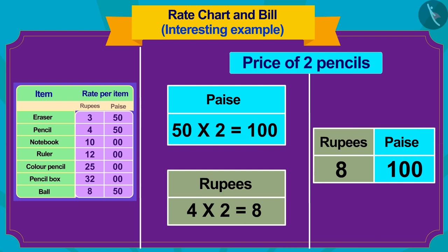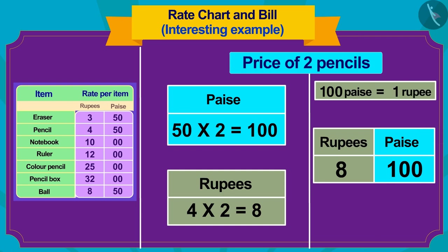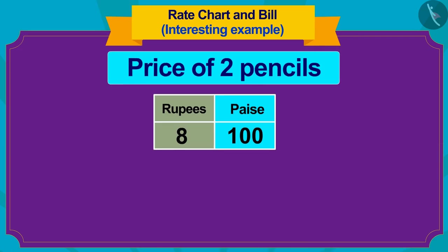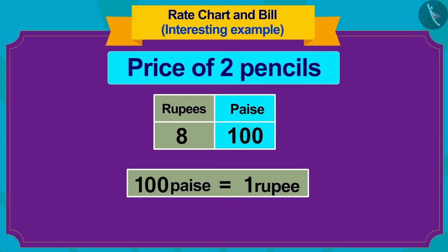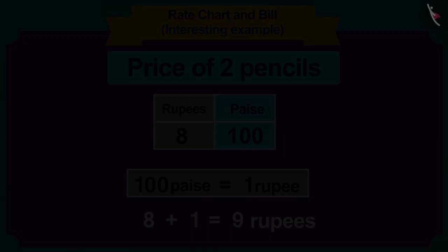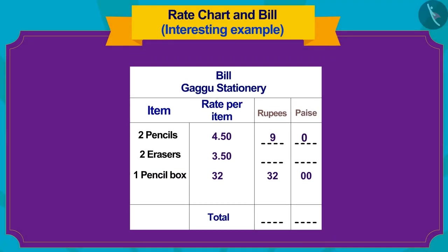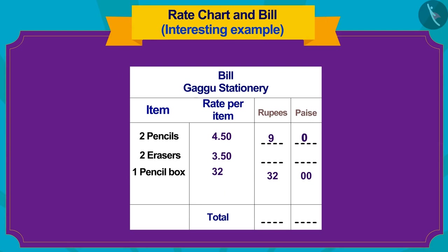But how much rupees is 100 paise? That's right — 1 rupee! Now, if we add the paise and rupees together, the value of 2 pencils will be 8 plus 1, or 9 rupees 0 paise. We will write it in the bill in this way.